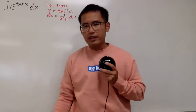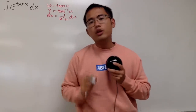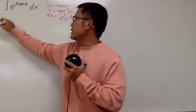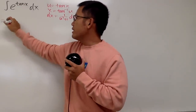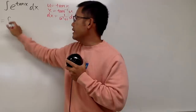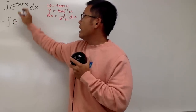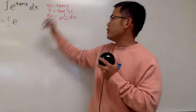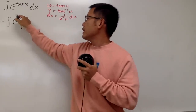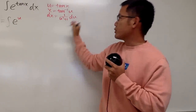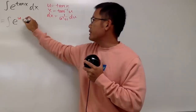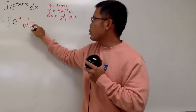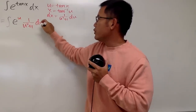Now we'll take this integral to the u-world. As we can see, this right here is going to be the integral, and we have e to the u — since tangent x is just u — and the dx becomes 1 over u squared plus 1, du.